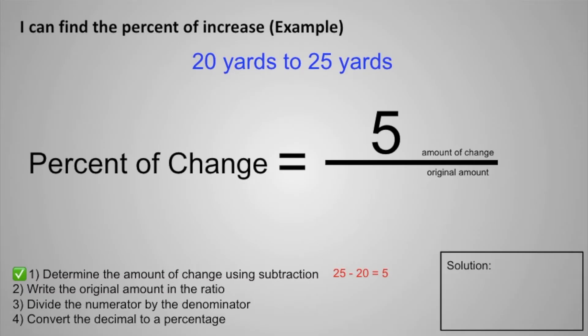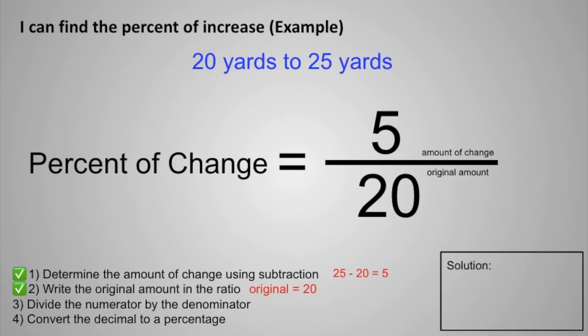Step two is to write the original amount in the ratio. The original amount is the amount given to us first, so the original amount will be 20. We put 20 as the denominator because it represents the original amount. Step three: divide the numerator by the denominator. 5 divided by 20 equals 0.25.